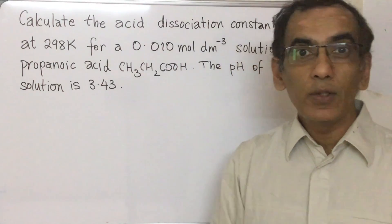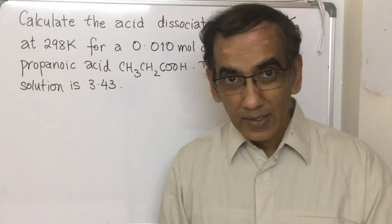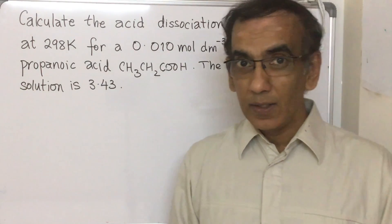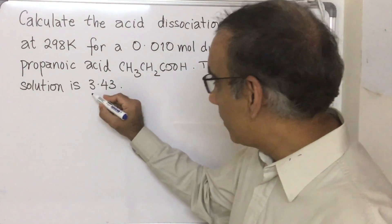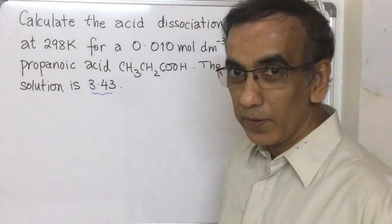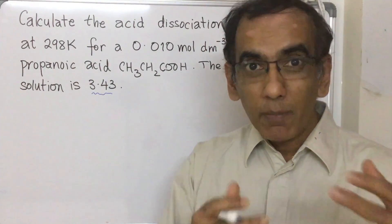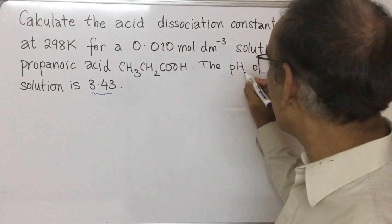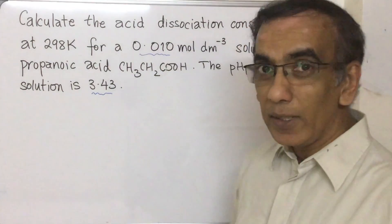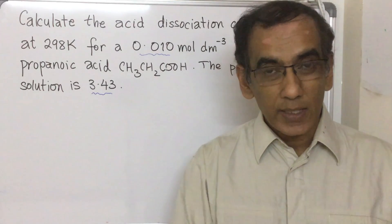Now what you need to know for this question is that propanoic acid is a weak acid, so therefore its pH of 3.43 does not line up with its concentration of 0.10 because it's not completely dissociated.